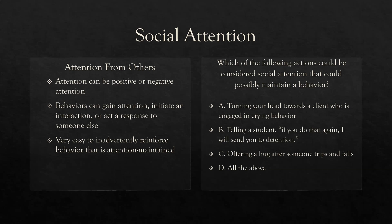A threat is still attention from the teacher. C — offering a hug after someone trips and falls. Again, we're giving attention: 'Would you like a hug? Are you okay?' A, B, and C all can possibly maintain behavior. All three are aspects of social attention. We have to be very aware of how we're responding to behavior. Attention comes in many shapes, forms, and sizes.